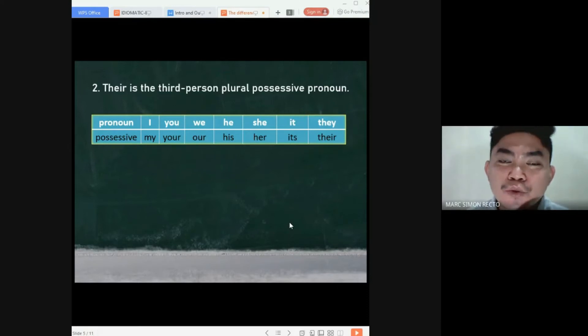I, possessive counterpart or possessive form, my, you, your, we, our, he, his, she, her, it, its, they, their. With that, we will have example sentences.